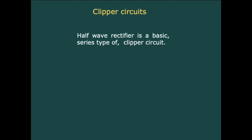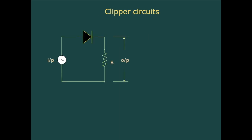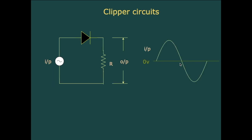We have already learned the half wave rectifier. The half wave rectifier is a basic series type of clipper circuit. Let us look at its working once again to see why it can be called a basic series clipper circuit. This is the circuit diagram of a half wave rectifier where we give a pure sine wave as input. During the positive half of the input cycle the diode will be forward biased.